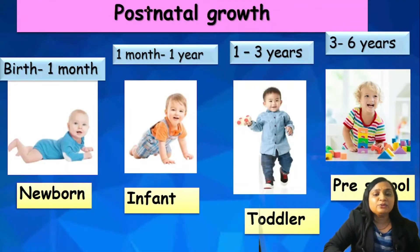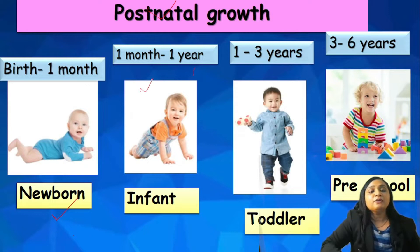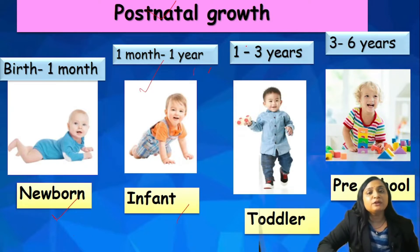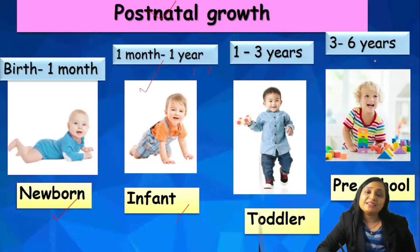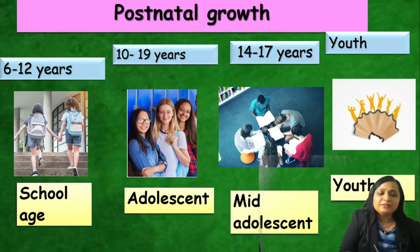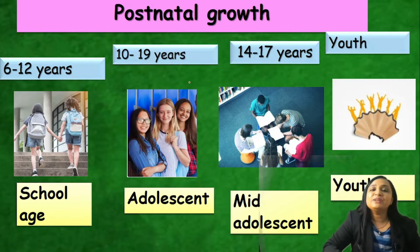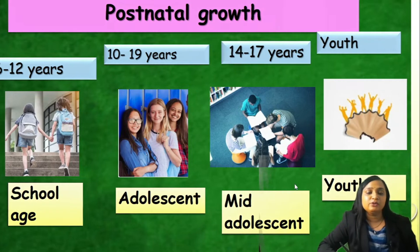If you see the postnatal growth, it is divided into few periods. From birth to first 4 weeks is called newborn. From 1 month to 1 year, we call the baby infant. From 1 to 3 years, we call it toddler. From 3 to 6 years, when the child starts going to playhouse, nursery or kindergarten, it is the pre-school age period. 6 to 12 years is school age. 10 to 19 years is called adolescent, and between 14 to 17 this is called mid-adolescent age.